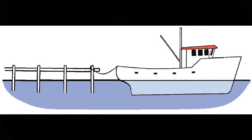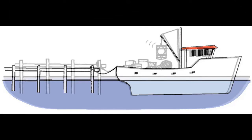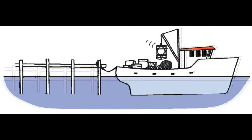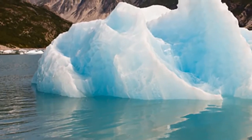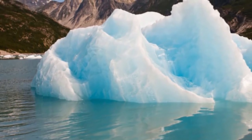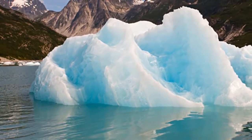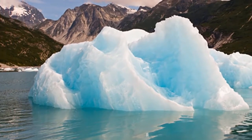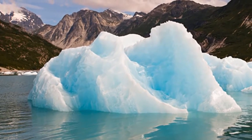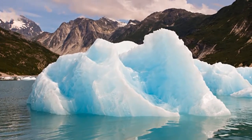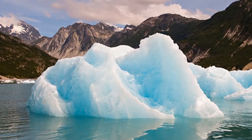Isostasy. Early workers discovered that Earth's less dense crust floats on top of the denser and deformable rocks of the mantle. The concept of a floating crust in gravitational balance is called isostasy — from the etymology: iso meaning equal, stasis meaning standing. Perhaps the easiest way to grasp the concept of isostasy is to envision a series of wooden blocks of different heights floating in water.